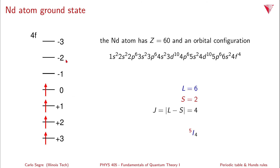With this simple graphical mnemonic, you can figure out the ground state configuration. In particular for chromium, we saw that the true ground state is 4s1, 3d5 rather than 4s2, 3d4.